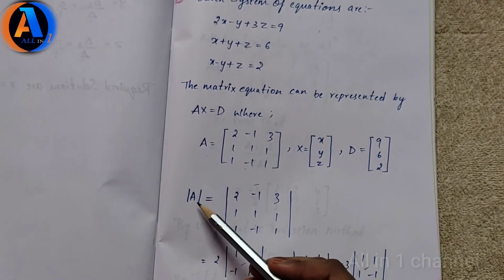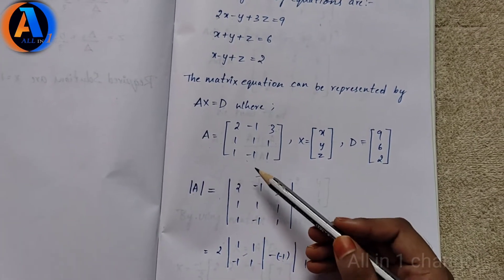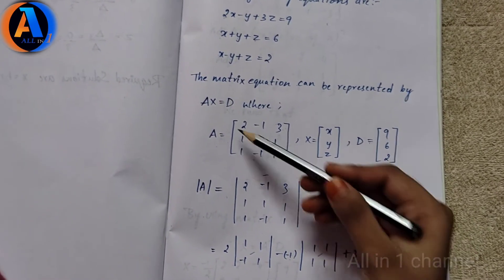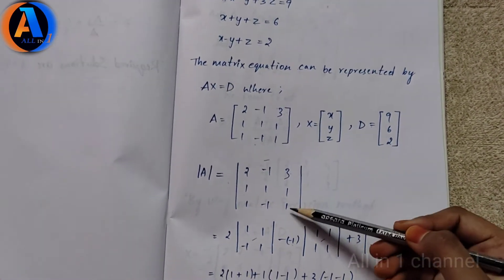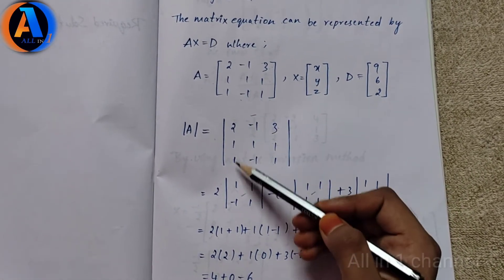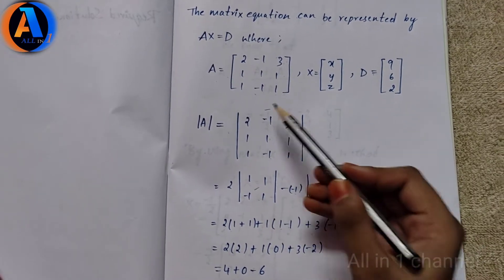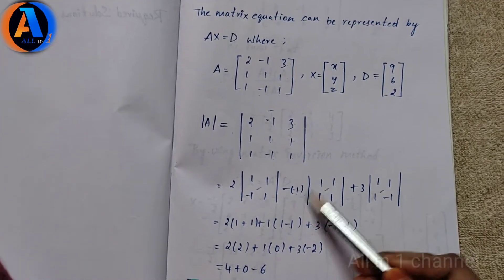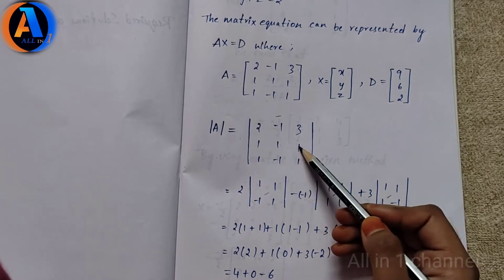Now we have to find det(A). Det(A) equals the determinant of the matrix [2, -1, 3; 1, 1, 1; 1, -1, 1]. Expanding along the first row: 2 times the minor of element (1,1), then delete first row and first column to get [1, 1; -1, 1]. Minus of (-1) times the minor from deleting first row and second column [1, 1; 1, 1]. Plus 3 times the minor from deleting first row and third column.